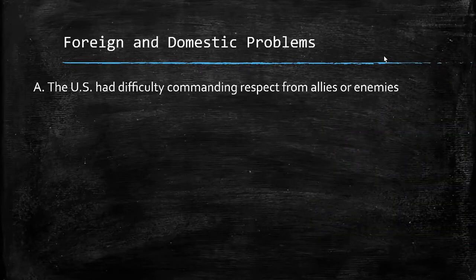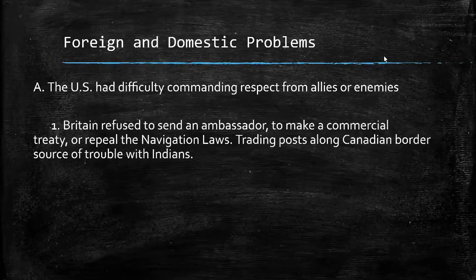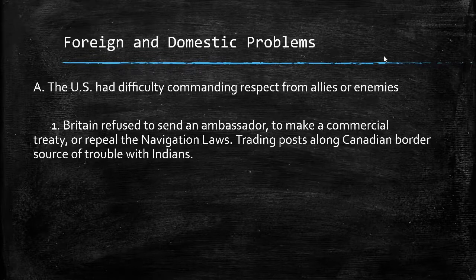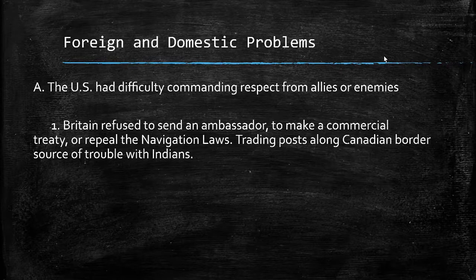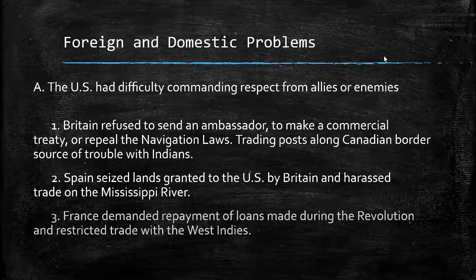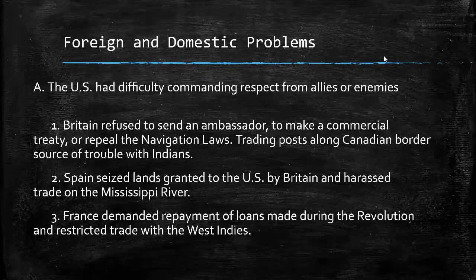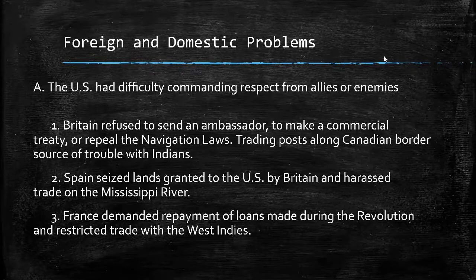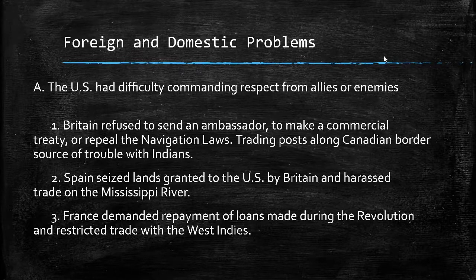Now let's run through the problems with the Articles, of which there were many. First, the U.S. could not command respect from other countries. Great Britain continued to treat the U.S. somewhat like a colony — they did not send an ambassador and still manned forts in the Northwest Territories. Spain had seized lands granted to the U.S. and harassed trade on the Mississippi River. France demanded repayment of loans made during the Revolution and took actions against the U.S. to force repayment. Under the Articles, there really was not much the United States could do, as it would be very difficult to raise a national army and navy without the ability to tax.